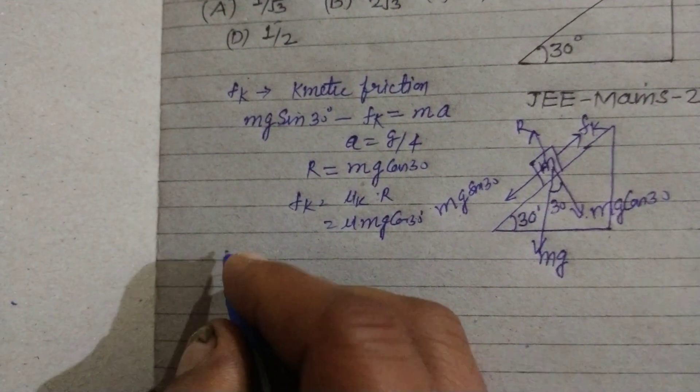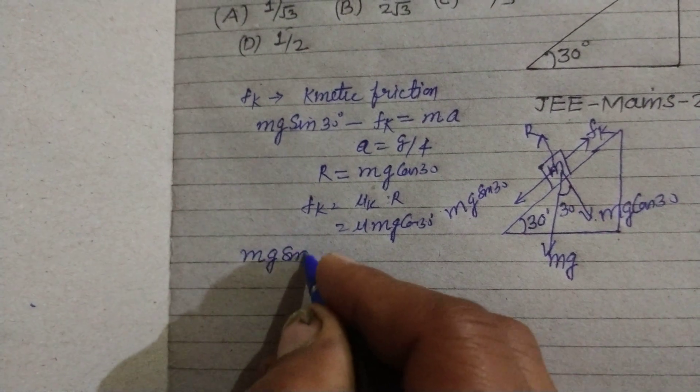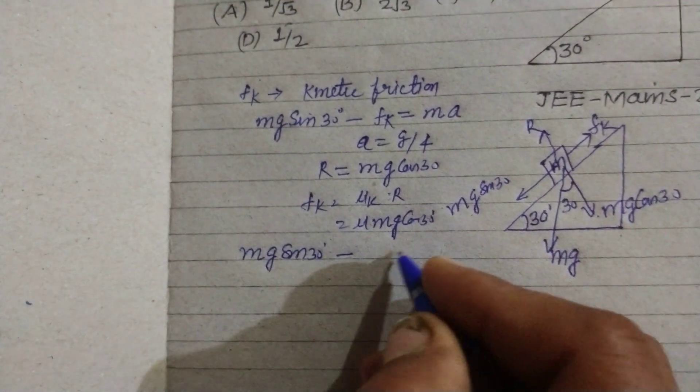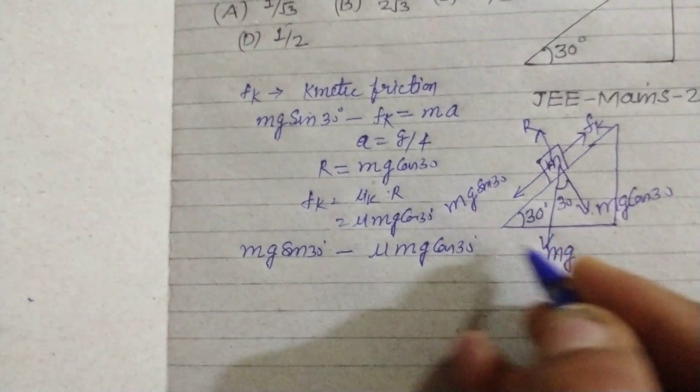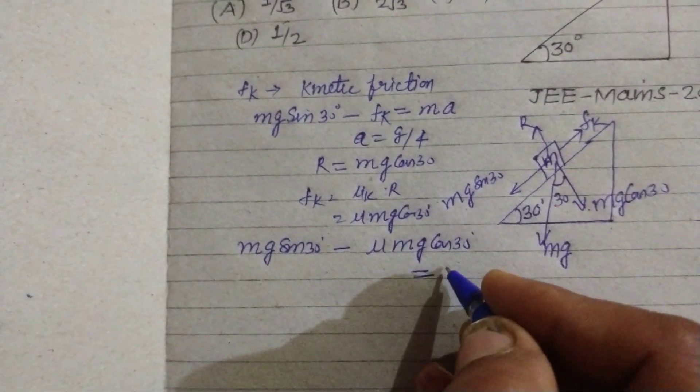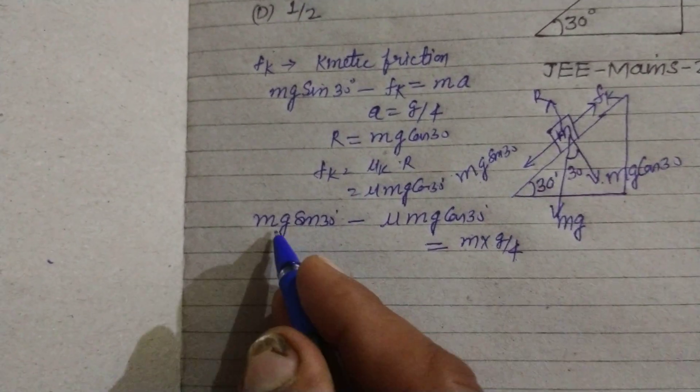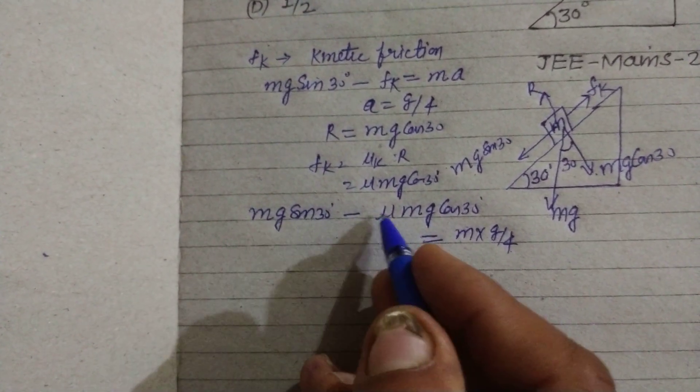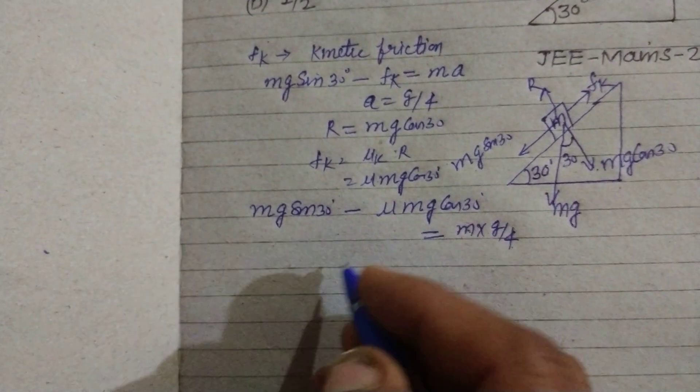Now putting the value here: mg sin θ minus μ mg cos 30° equals mA, and A is g/4. So first we remove m and g from both sides.